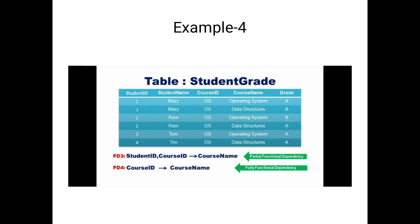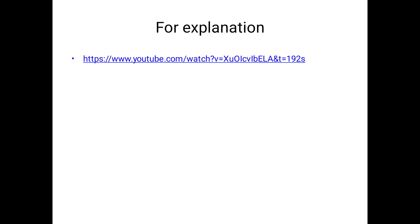Similarly, student_id, course_id implies course_name: since course_id alone gives the course_name, this is a partial dependency. Course_id implies course_name is the fully functional dependency here. Thank you very much for your patience.